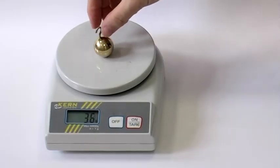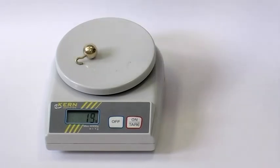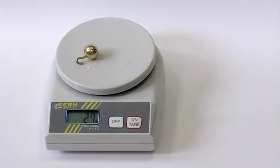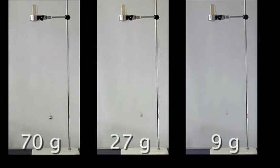The following video shows three pendulums of the same length but different masses, 70, 27 and 9 grams. In spite of having bobs of different masses, they oscillate in sync and therefore they have the same period.